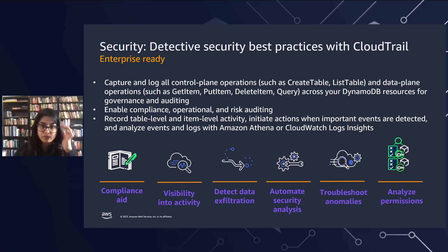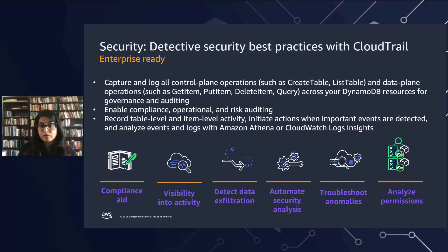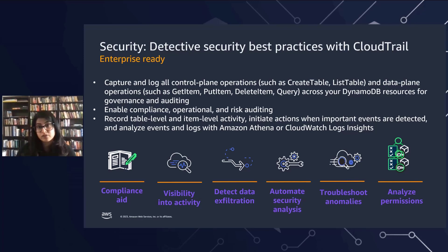What does CloudTrail give you visibility into? You can look into who is using a resource, whether they modified it, when they accessed it, where they logged in from, whether it was during a maintenance window, who were the active users during an incident, what events occurred during that time period, and what actions AWS took on your behalf — and many more actions can be tracked using your CloudTrail logs. This not only helps as a compliance aid, it also helps you gather information so you can take corrective actions in the future.